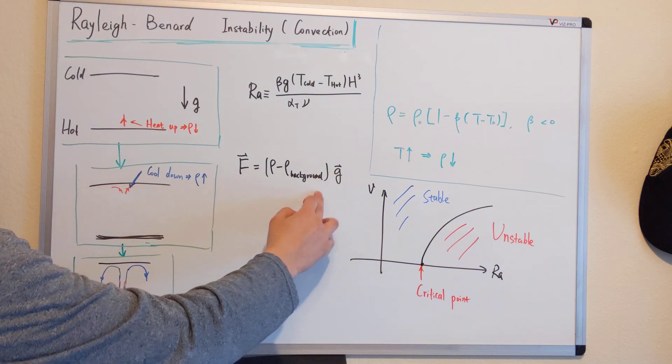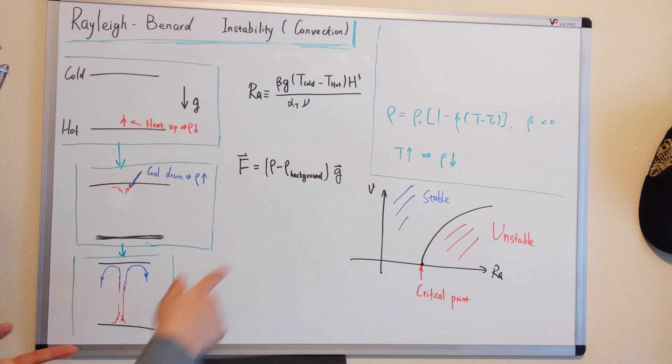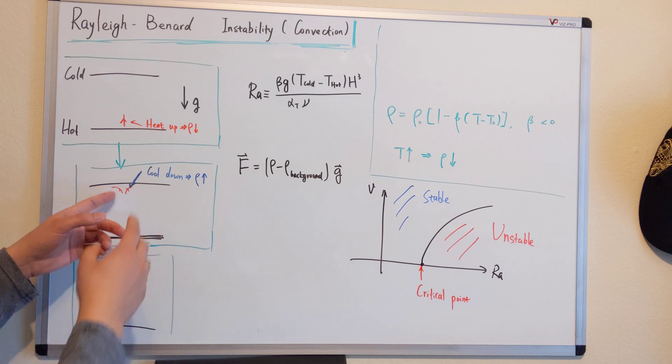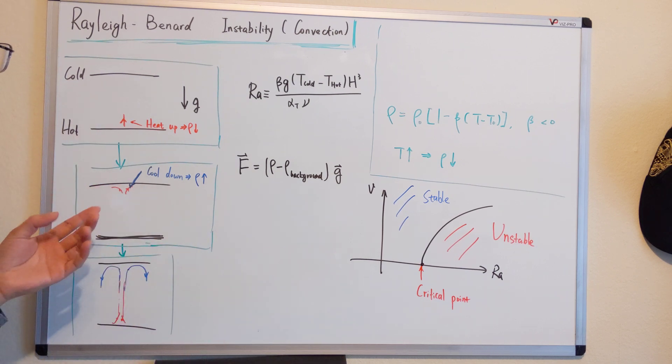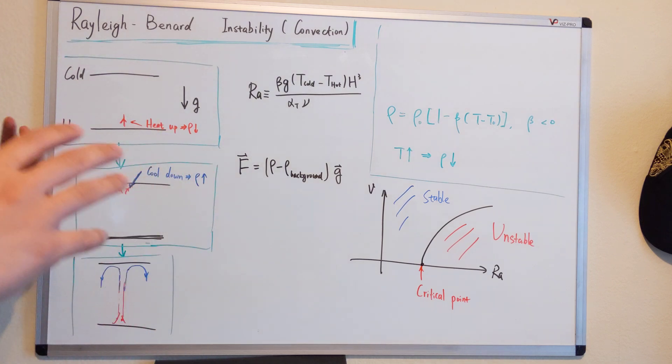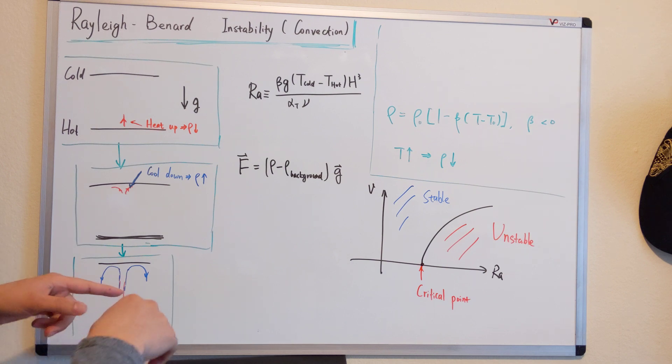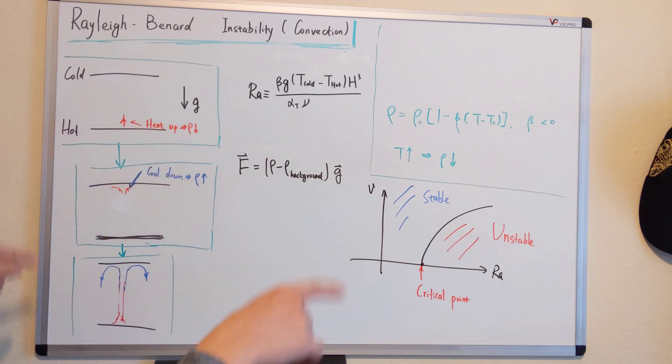Then basically you can use this simple equation to demonstrate it. It goes up to the top, and then it starts to cool down. Once the material cools down, the density increases, and it will sink to the bottom. That's why it starts to have this type of motion.